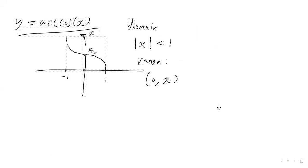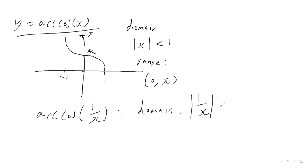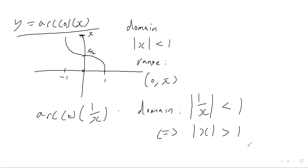In this video we want to work with the arccos of 1 over x function. The domain for this function is going to be where the modulus of 1 over x is less than 1 — which is exactly the same as saying that the modulus of x is greater than 1. The range doesn't change: arccos has a range between 0 and pi, so the range is still 0 to pi.